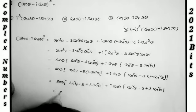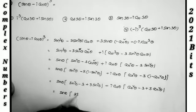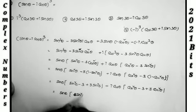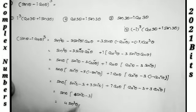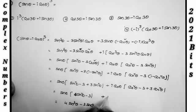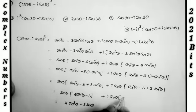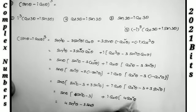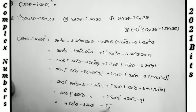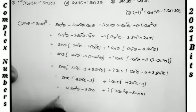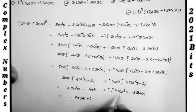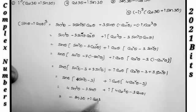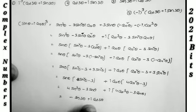This simplifies to: sin θ · (4sin²θ − 3) + i cos θ · (4cos²θ − 3). Now 4sin³θ − 3sinθ equals −sin 3θ using the triple angle formula, and 4cos³θ − 3cosθ equals cos 3θ. So the expression becomes −sin 3θ + i cos 3θ.